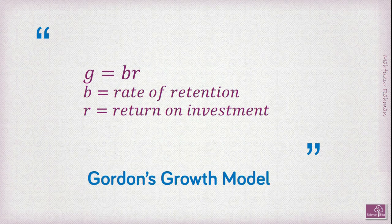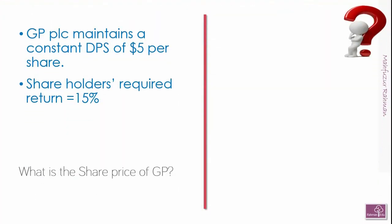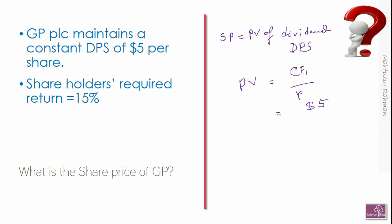Now we are going to do some exercises to learn the dividend valuation model practically. Exercise one: What is the share price of GP plc, which maintains a constant DPS of $5 per share and has a shareholders' required return of 15%? Here we have a perpetuity with no growth, so every year the cash flow is $5. Share price equals present value of dividends, and under the perpetuity model, PV equals CF1 divided by r. So: $5 divided by 15% equals $33.33 per share.